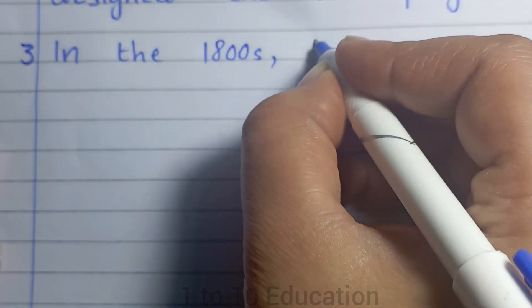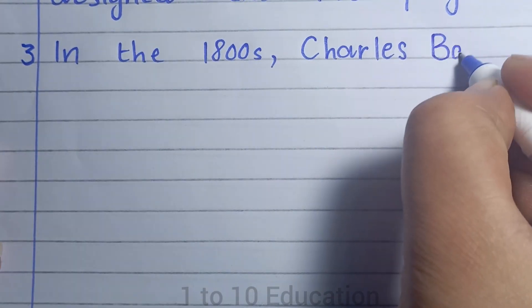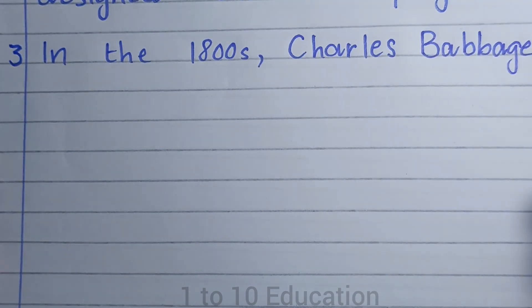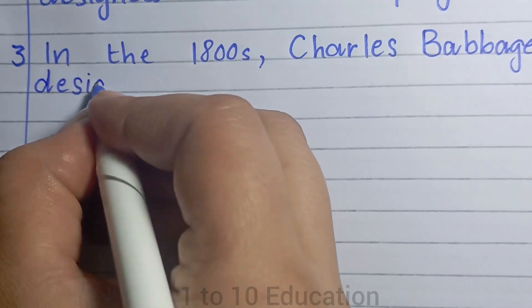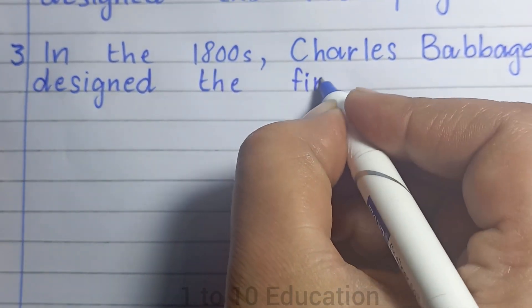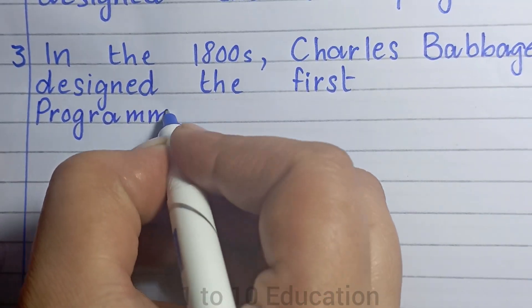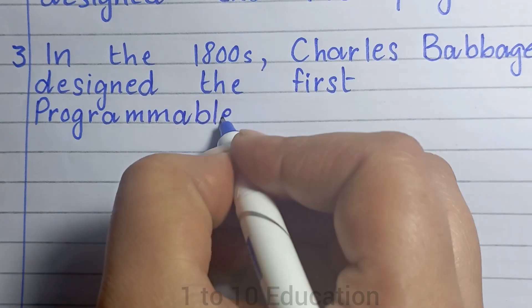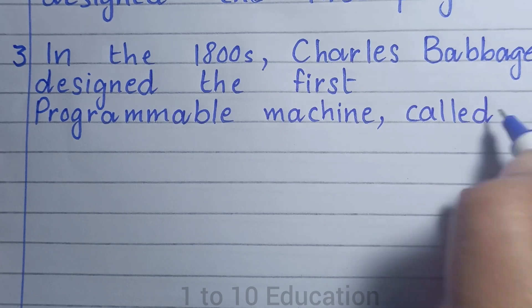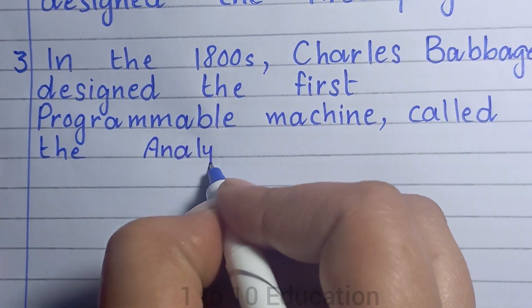Number 3: In the 1800s, Charles Babbage designed the first programmable machine called the analytical engine.